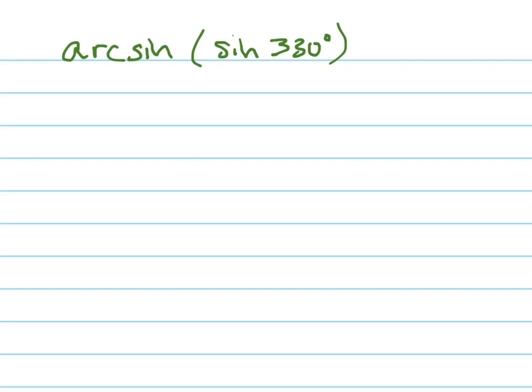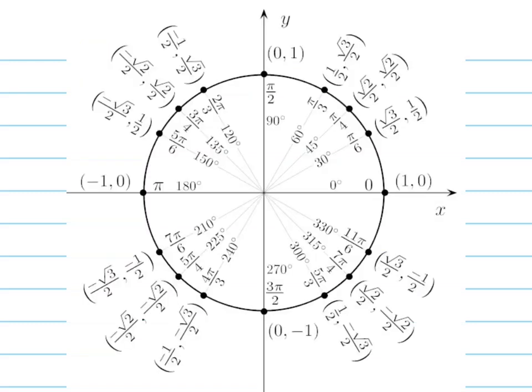Let's do a trickier problem, kind of the other direction. Now I'm saying, what's the arc sine of the sine of 330? A lot of people think that these would just cancel each other out, and your answer would be 330. But that's not true because, let's look at this.